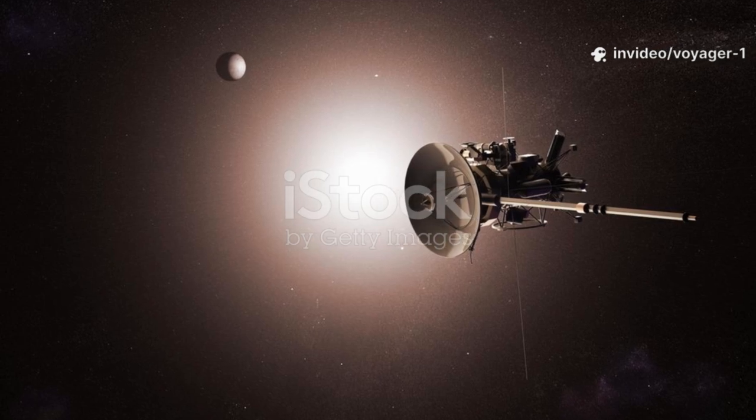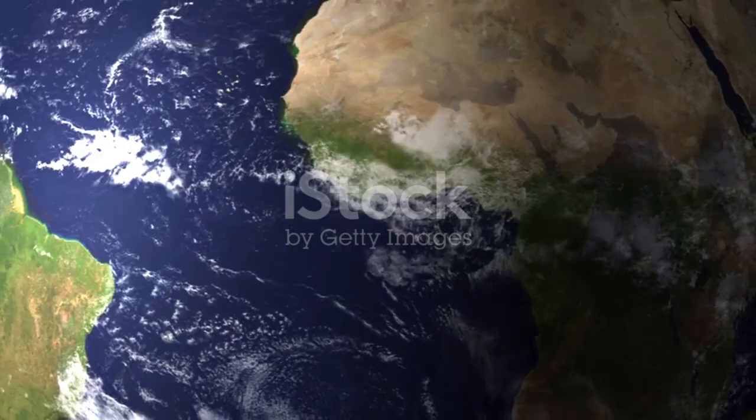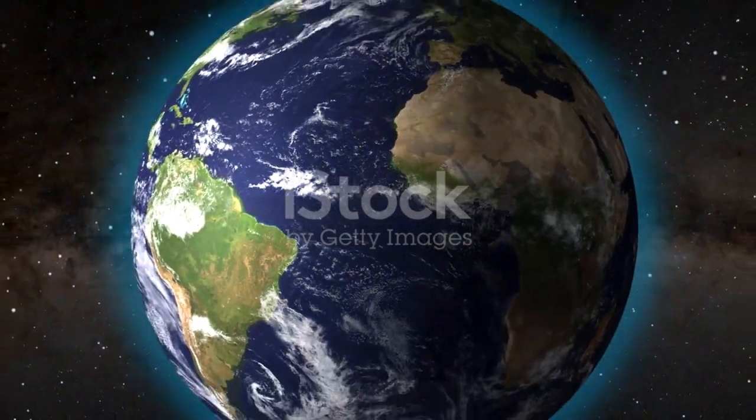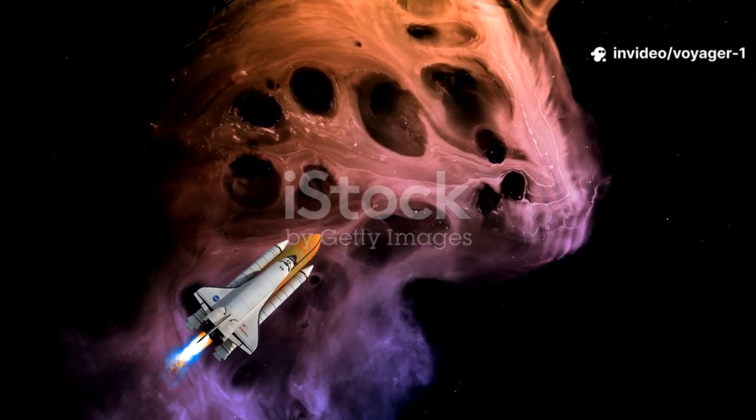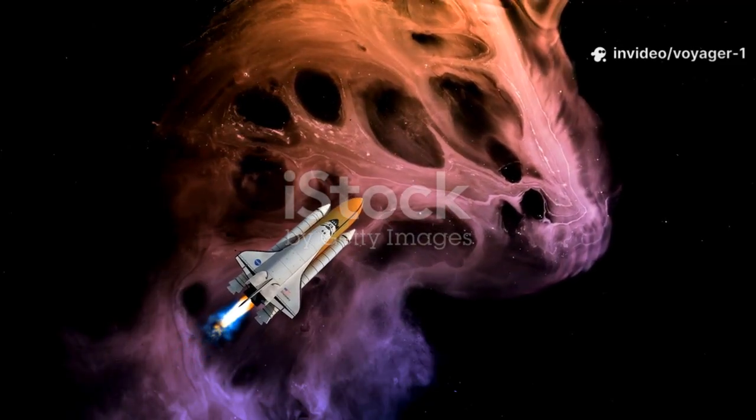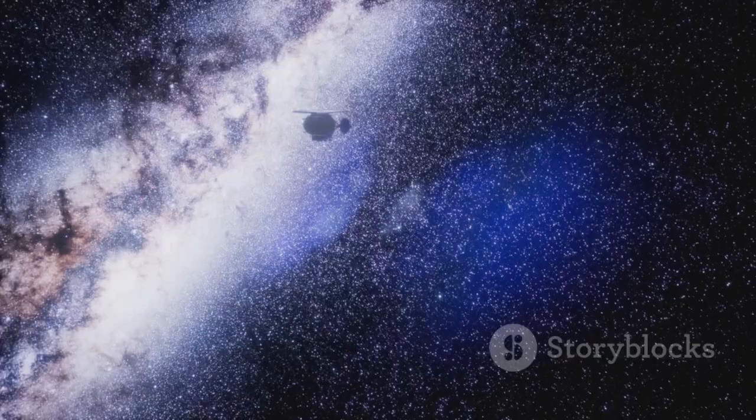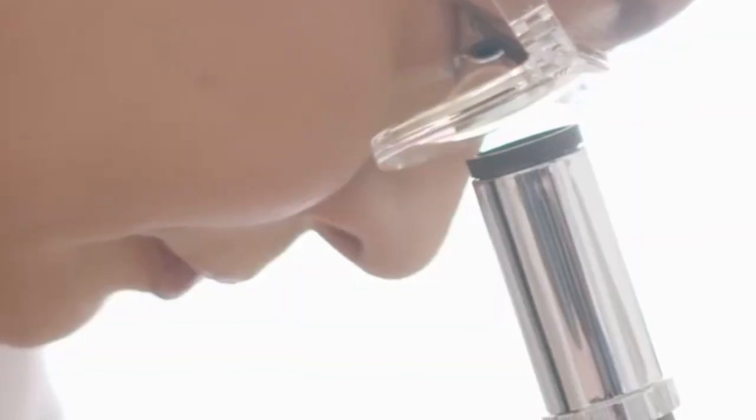One of the biggest shocks from Voyager 1 came from its magnetometer. This instrument measures the direction and strength of magnetic fields. Everyone expected the magnetic field to change direction dramatically once the spacecraft entered interstellar space. The Milky Way's magnetic field should be oriented differently from our sun's, but that's not what happened.